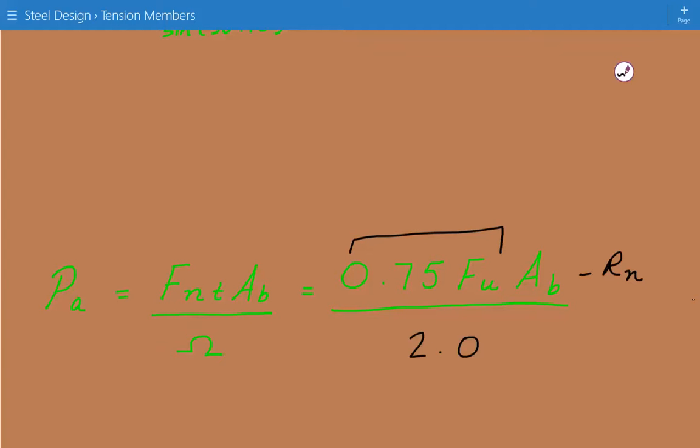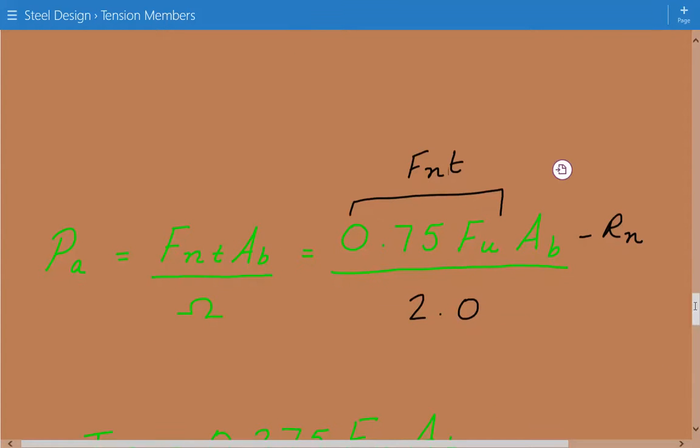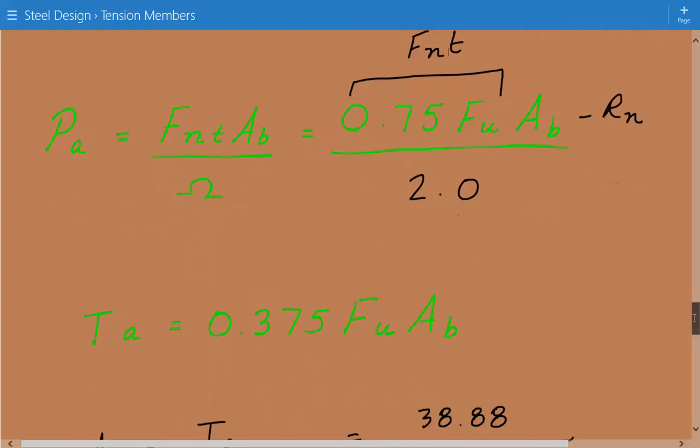per AISC table J3.2 is equal to 0.75 times the ultimate tensile strength. And the safety factor for this limit state of tensile rupture is equal to 2.0. And so we just simplified this equation even more. So our allowable tensile loading is equal to 0.375 times the ultimate tensile strength times a cross-sectional area.